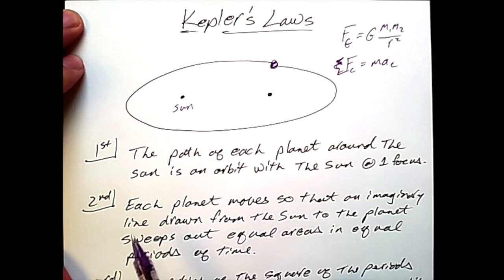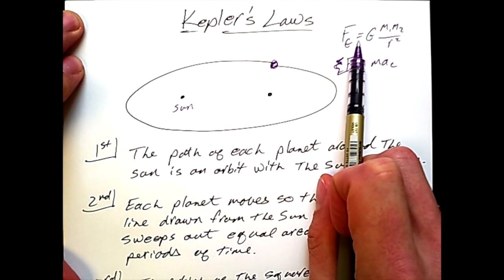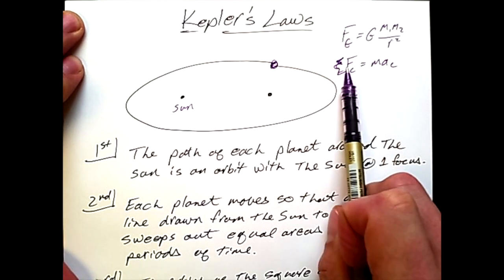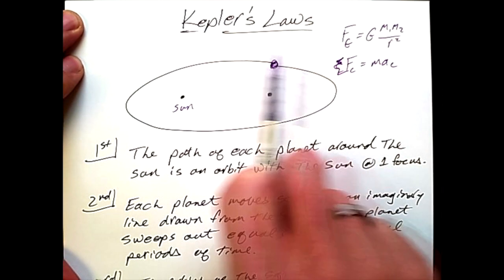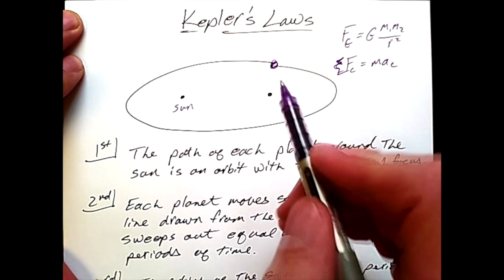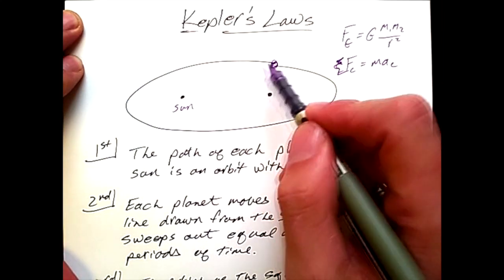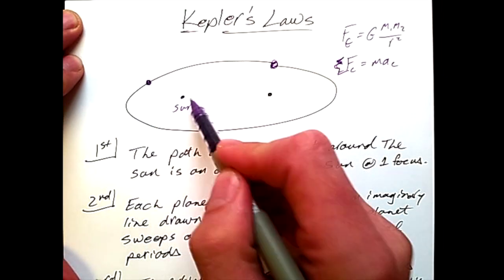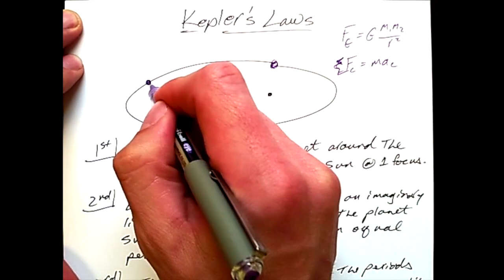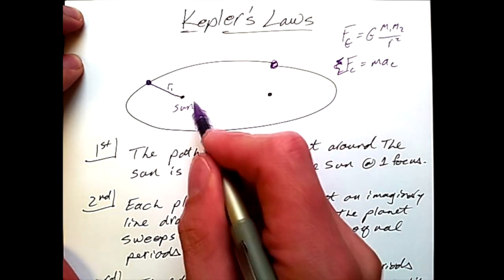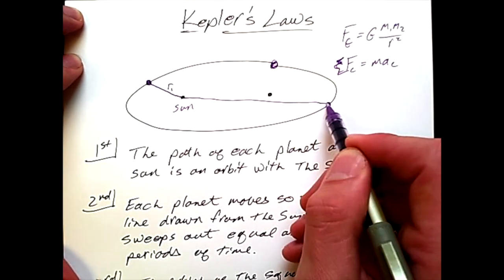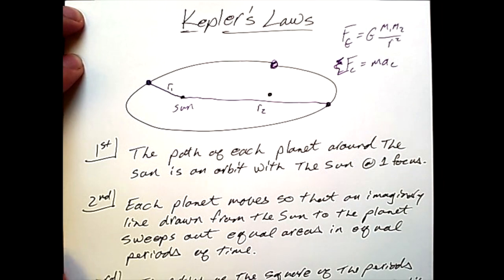The second law is that each planet moves so that an imaginary line drawn from the sun to the planet sweeps out equal areas in equal periods of time. What this means is that due to universal gravitation, this force is changing based on the radial distance away, which means the centripetal acceleration varies as the planet moves around the elliptical path. What should be fairly intuitive is that the closer the planetary body is, the greater the force. This is because the radial distance R1 from here to here is much less than when the planet has orbited all the way around to some location here. Remember that the sun is the main body doing the attraction, so R2 would be much further away.